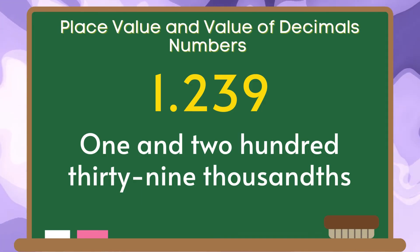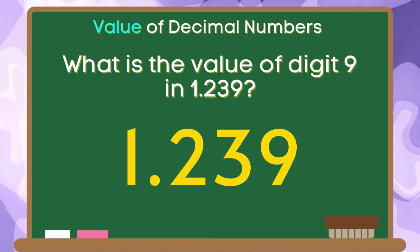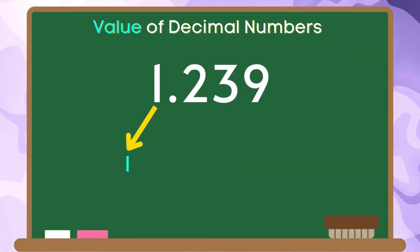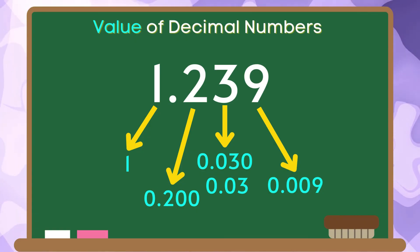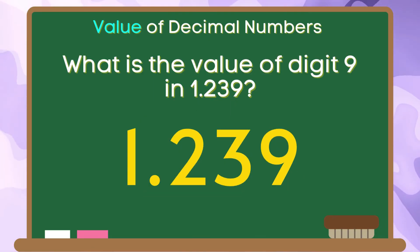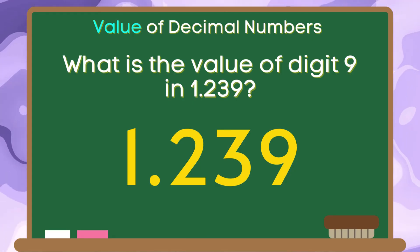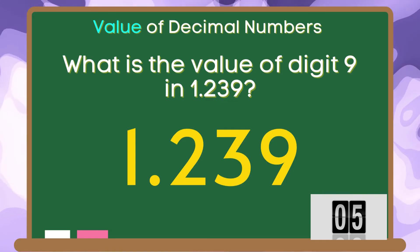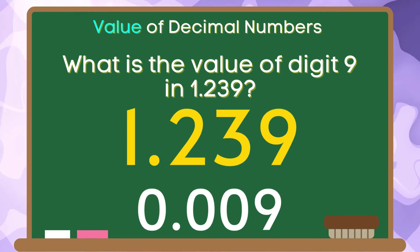Let us have another example. We have one and two hundred thirty-nine thousandths. What is the value of the digit nine in one and two hundred thirty-nine thousandths? The value of the digit one is one. The value of the digit two is two tenths. The value of the digit three is three hundredths. And the value of the digit nine is nine thousandths.